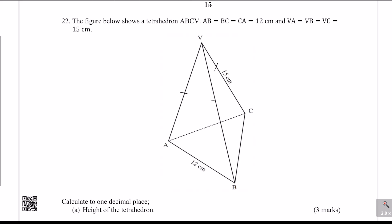First question: calculate to one decimal place the height of the tetrahedron. To get the height, you draw a perpendicular from the vertex V to the midpoint of the base. The base is an equilateral triangle. We name the midpoint O. We join C to that midpoint, forming a right-angle triangle VOC. That is the triangle we're going to use.